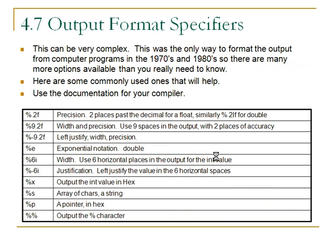For output you have a lot more control. You can specify not only the data type you're using, but also the precision of the floating point number and the width of the value being output to the console. For example, if you wanted to output a double value with nine places in the output and two places past the decimal, you could use %9.2lf. F is for float, and lf is for double. You can use this table as a guide for the commonly used format specifiers.